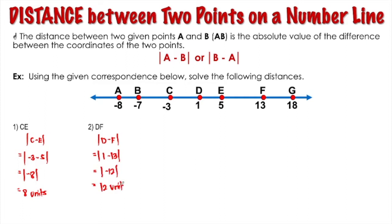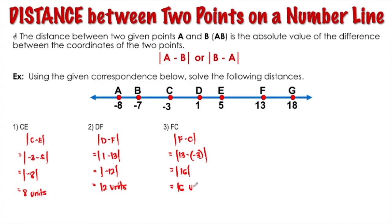Next, let's have the distance between point F and point C. Using the formula, we have the absolute value of F minus C. The coordinate of F is 13, while the coordinate of C is negative 3. Solving this gives us positive 16, and the absolute value of positive 16 is 16. So this is the distance from point F to point C.